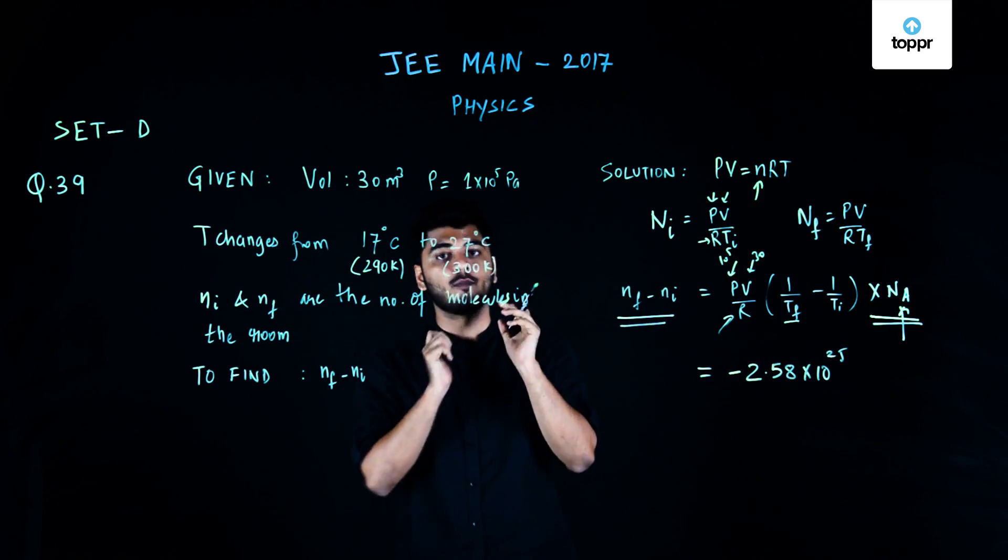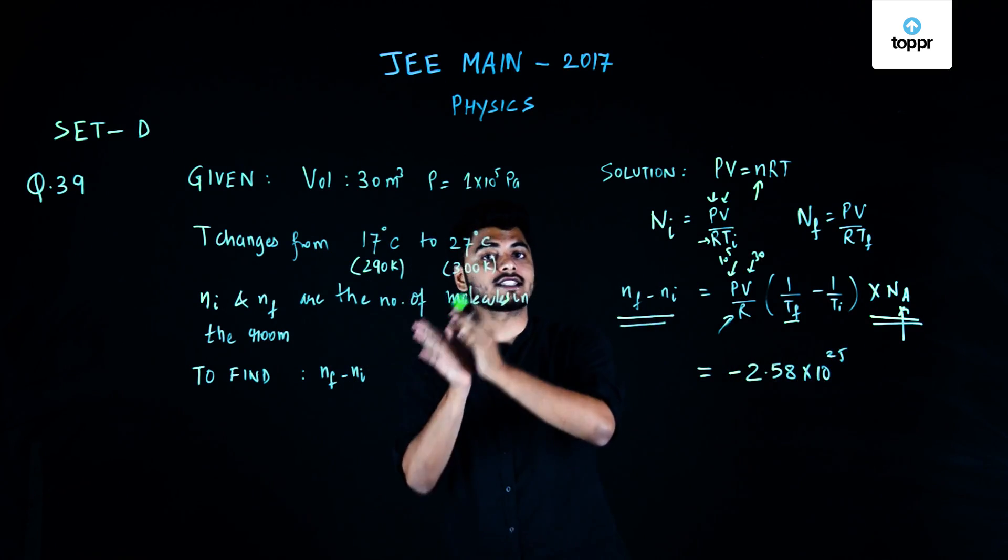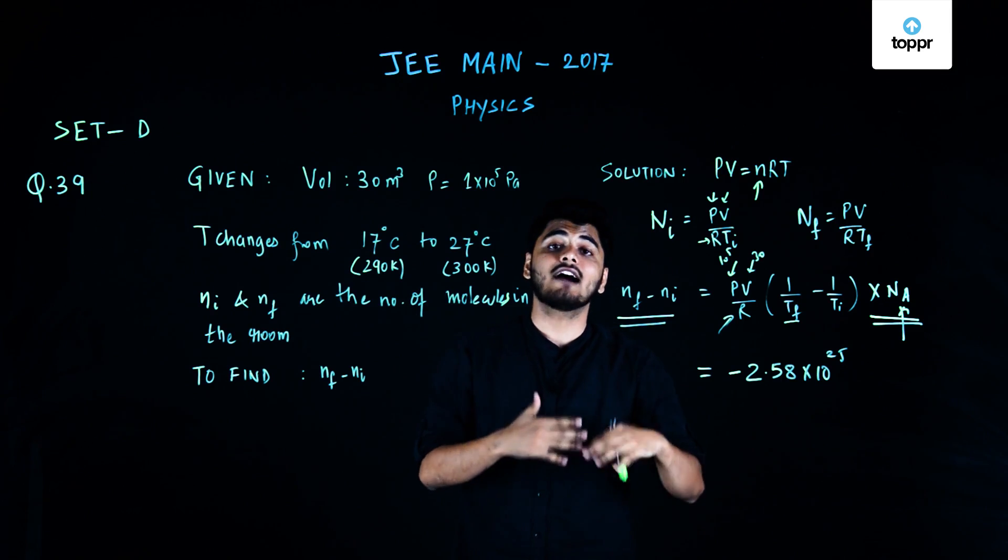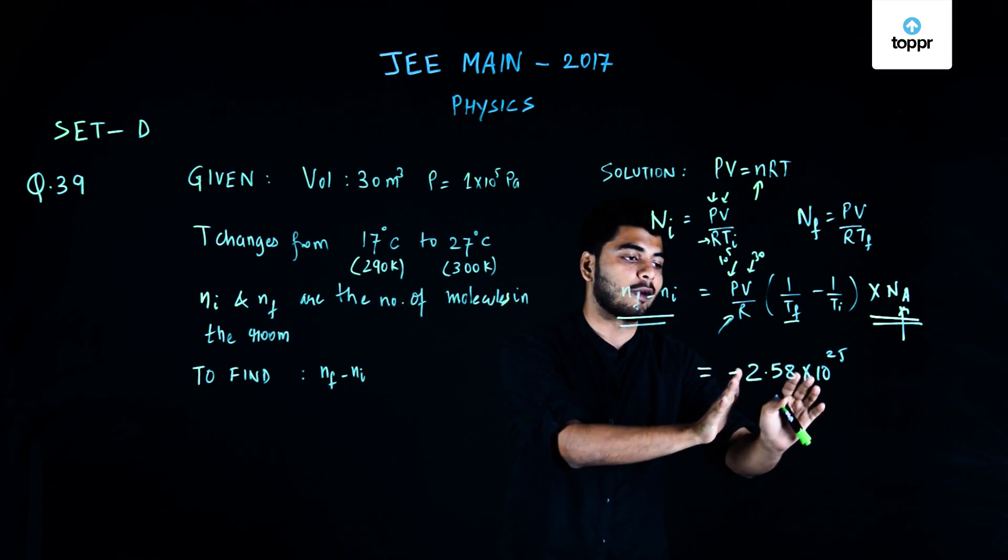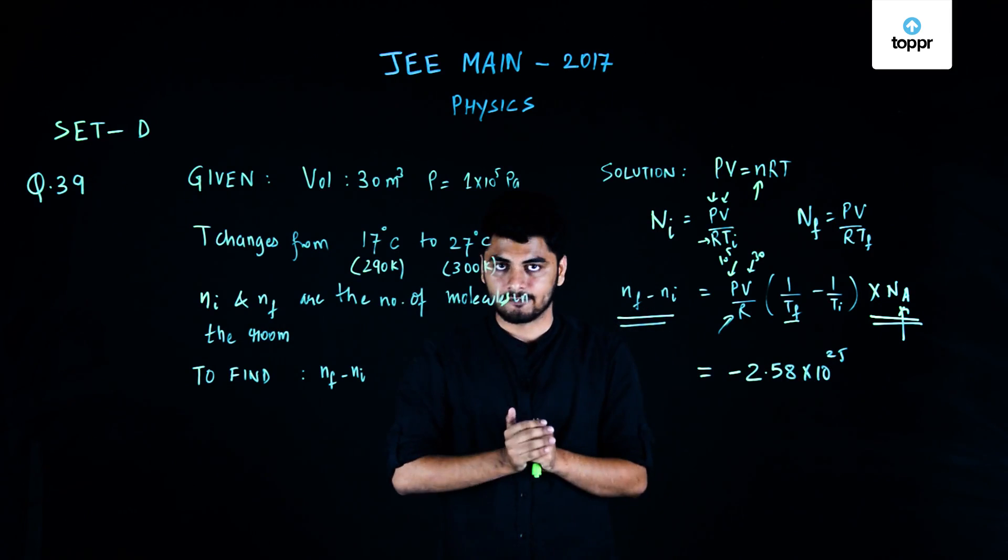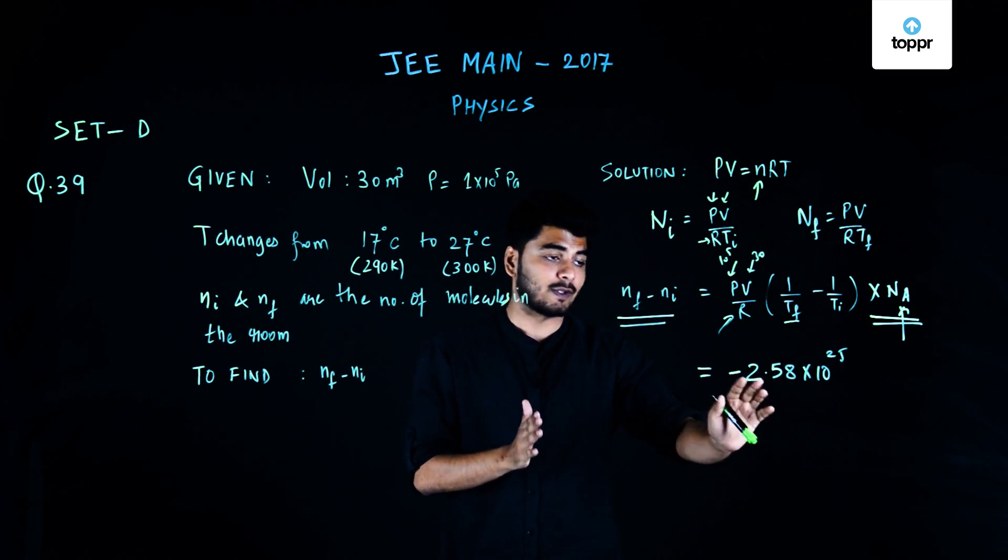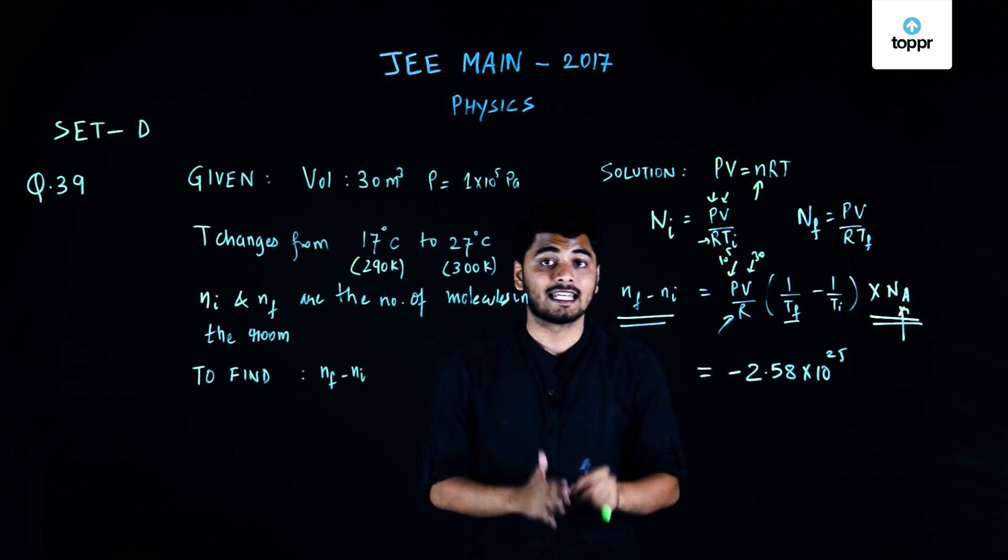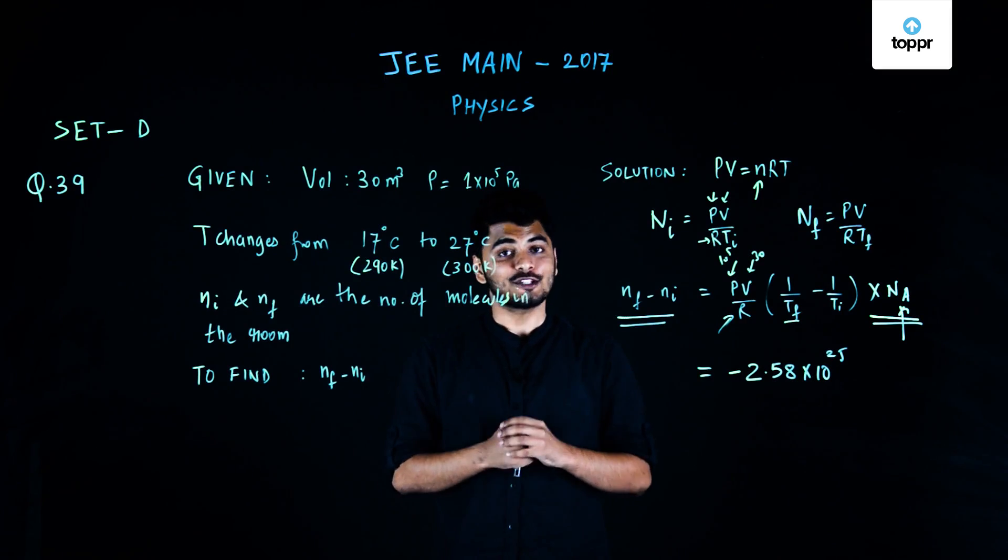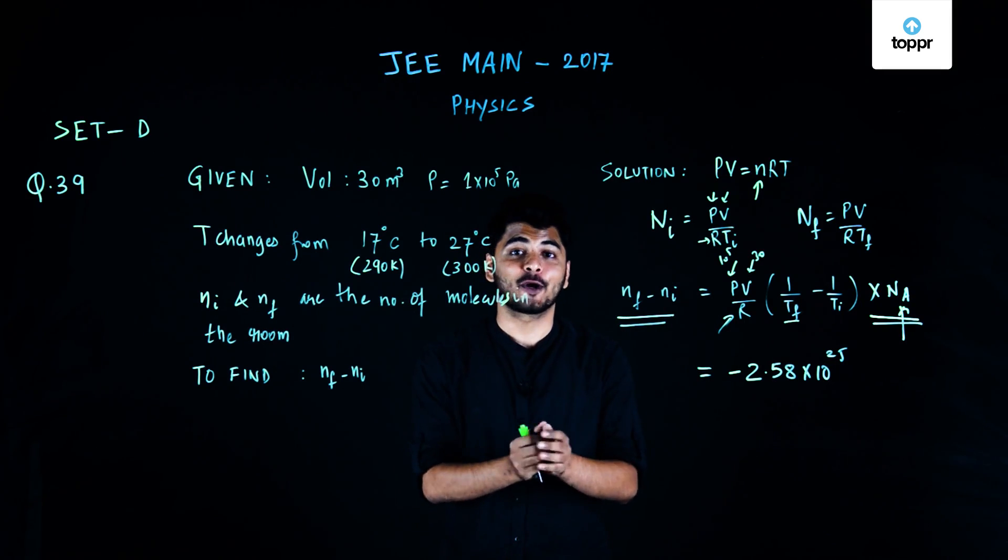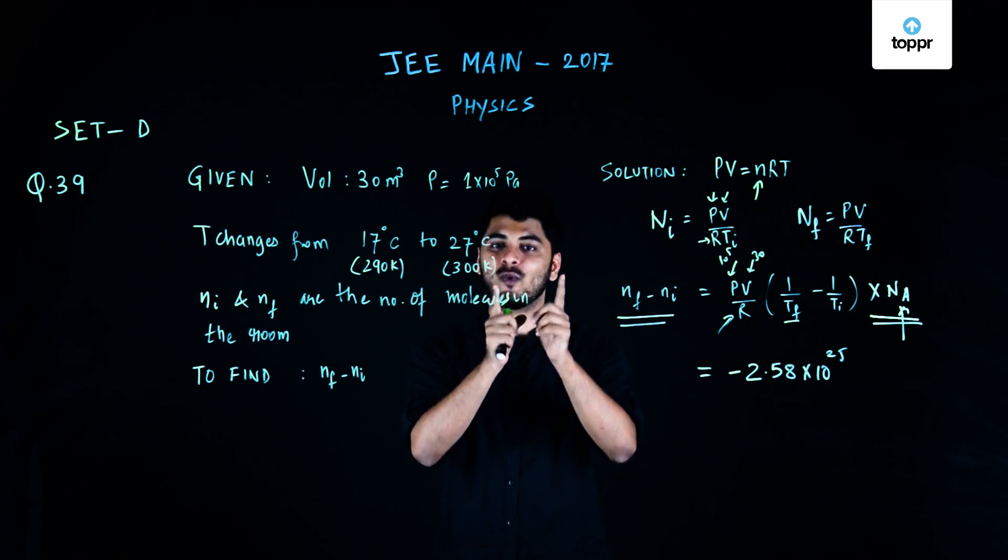So, the difference in the number of molecules before the sunshine was allowed to enter the room and after the sunshine was allowed to enter the room was nothing but equals to minus 2.58 into 10 raised to power 25. So, I hope you were able to understand how the solution went on and if you like the solution, please subscribe and like our channel and please hang on to our channel as we are going to upload more video solutions very soon.